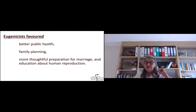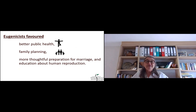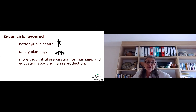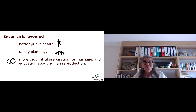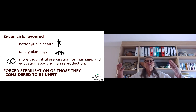So what do the eugenicists favour? They favour better public health — we have that in South Africa. They favour family planning — we've got family planning set up here in South Africa, where you plan your family and have as many children as you can cope with. More thoughtful education about how you reproduce and preparing for marriage — all of those things we can believe in. Unfortunately, forced sterilization of those they considered unfit, we can't really believe in. And this is where the eugenicists become a little bit uncomfortable.